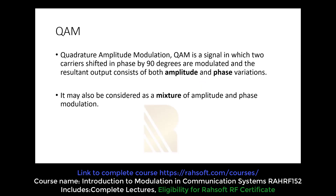Quadrature amplitude modulation, QAM, is a signal in which two carriers are shifted in phase by 90 degrees. So up to now there's nothing new, because we can understand this is a quadrature modulation. As we talked before, in quadrature modulation we have cosine and sine, and these two signals have a 90-degree phase shift.